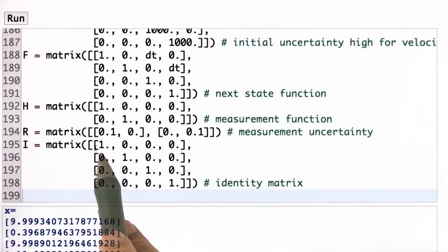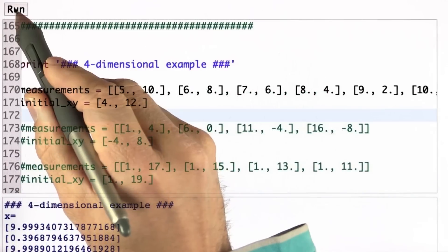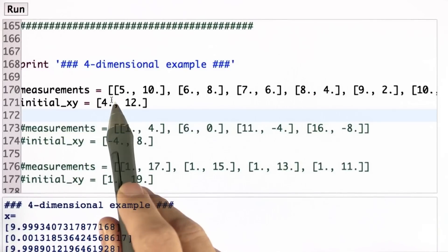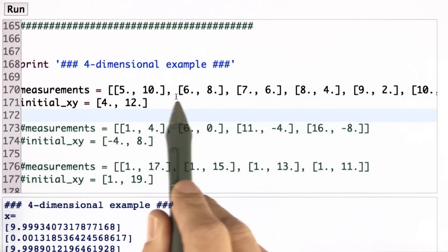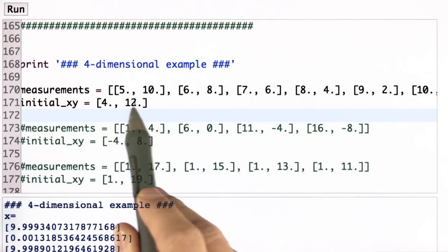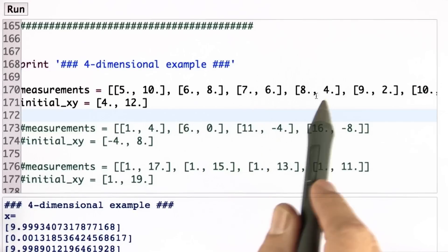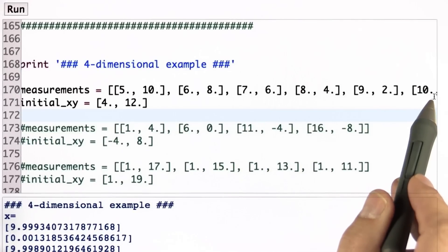And this is obviously how a four-dimensional identity matrix looks over here. So if I run this for my first example, where the measurements are 5, 6, 7, 8, 9, and 10, and the second dimension 10, 8, 6, 4, 2, and you can't see it but it's 0 over here.